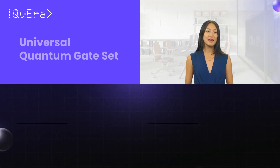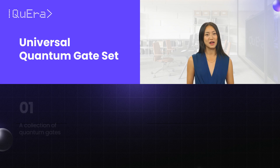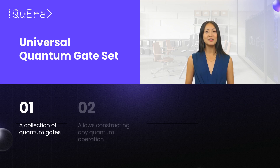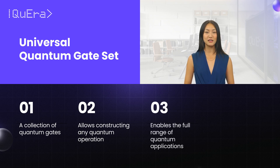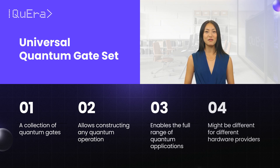In summary, a universal gate set is a collection of quantum gates that allows constructing any quantum operation, thus enabling the full range of applications with quantum computers. Different hardware providers might use different universal gates.